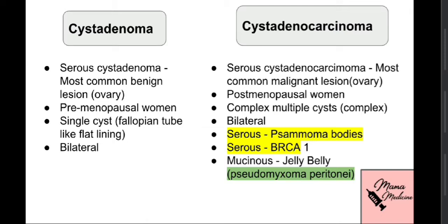The benign form most commonly presents in premenopausal women aged 30 to 40. On examination, a single cyst is found with a fallopian tube-like flat lining, and it is most likely bilateral. The malignant version — serous cyst adenocarcinoma — is the most common malignant lesion of the ovary, occurring most commonly in postmenopausal women aged 50 to 70 or older. It presents with complex, multiple bilateral cysts visible on histological examination.